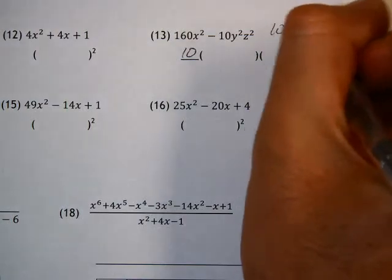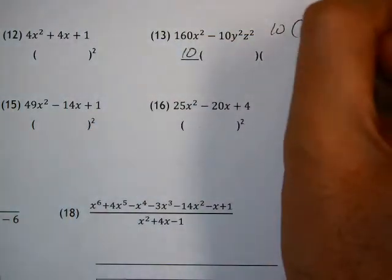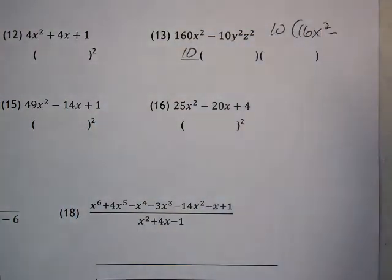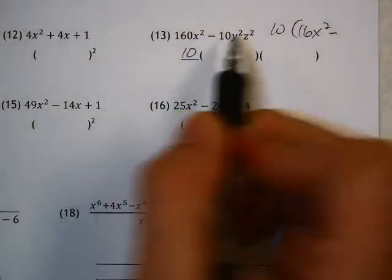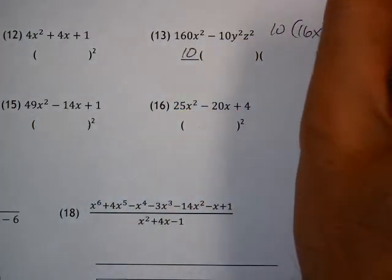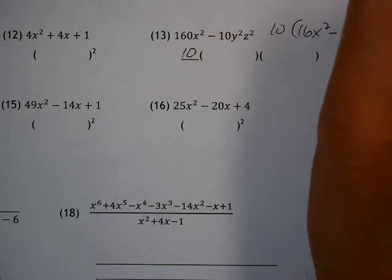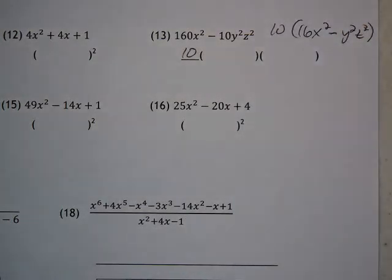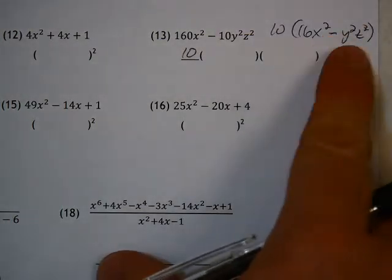If I factor out 10, it'll give me 16x squared minus 10 divided by 10 is 1, so just that y squared z squared by itself.